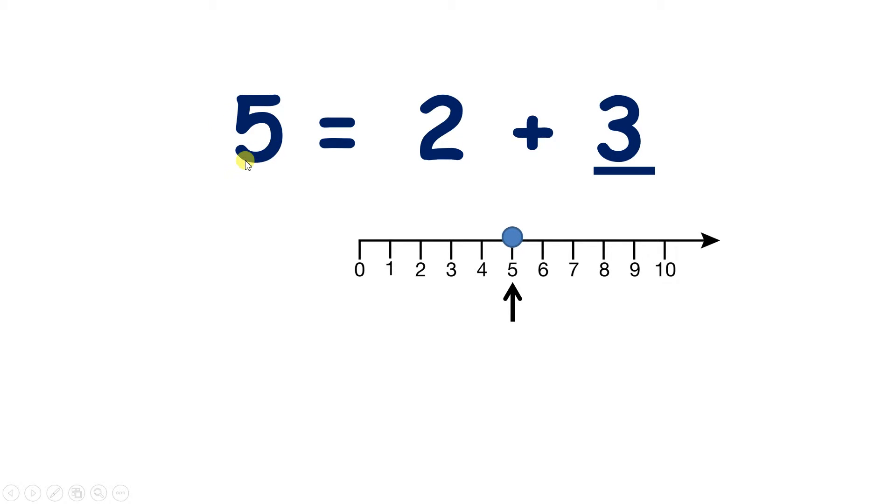So maybe one person had 5 sweets, and another person had 2 sweets, and was then given another 3 sweets. So in this case, the equals sign would just tell us that they now have the same number of sweets.